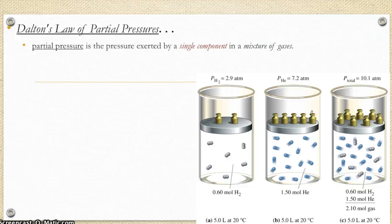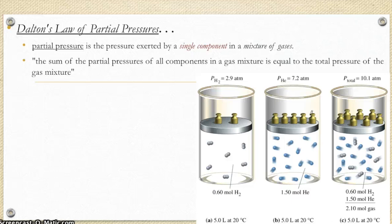First, the term partial pressure is talking about one pressure for one component in a mixture of gases. And then the actual law says that the sum of all the pressures of the things you put in will give you the total pressure of the container. In other words, the pressure of a mixture of gases is just equal to the sum of its parts.